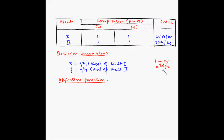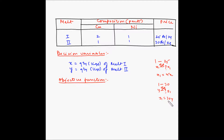Similarly, for melt two the cost per kg is 30 rupees, so for y kgs the cost is 30y. The cost of x kgs of melt one is 25x while the cost of y kgs of melt two is 30y. So the total cost of melt three becomes 25x + 30y. Let this be C, and our objective is to minimize C.